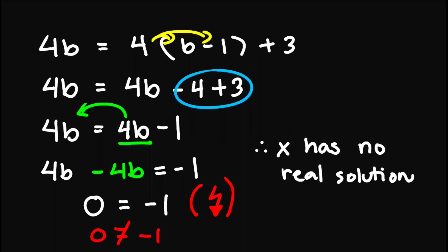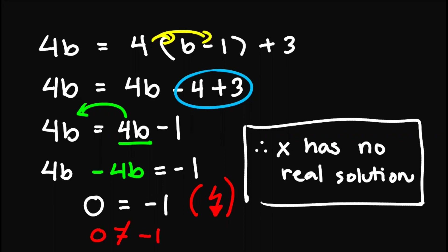So take note of this. Whenever we encounter this — it could be something like 2 equals 3 — and since we know that this is not true, it immediately results in x having no real solution.